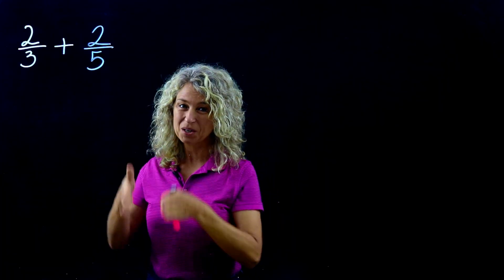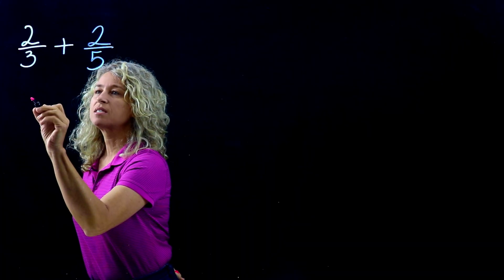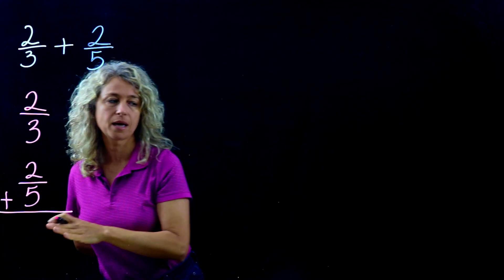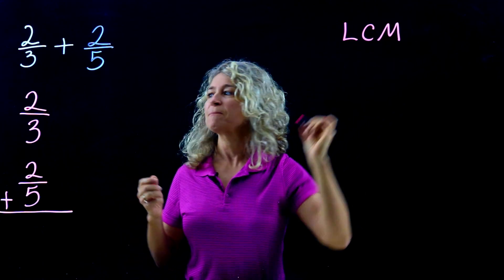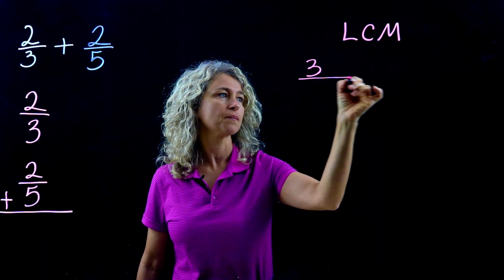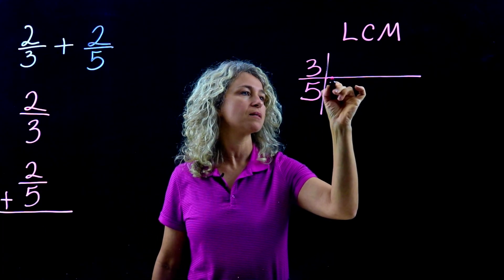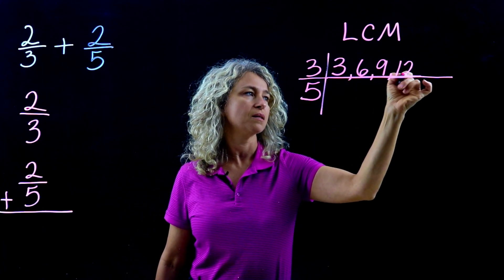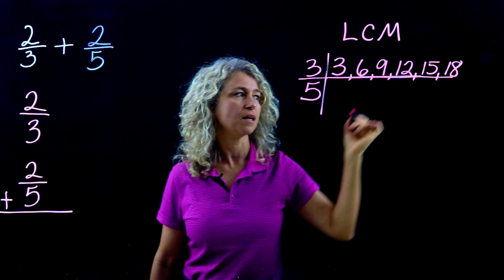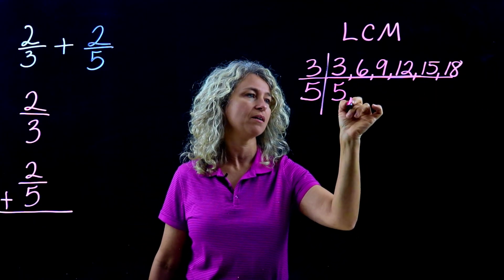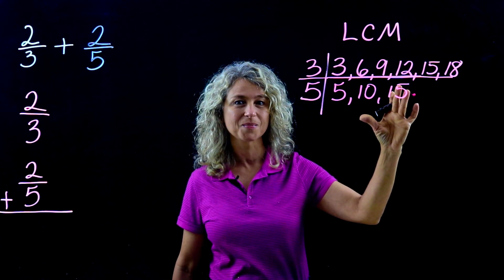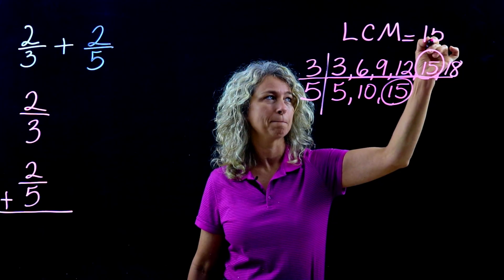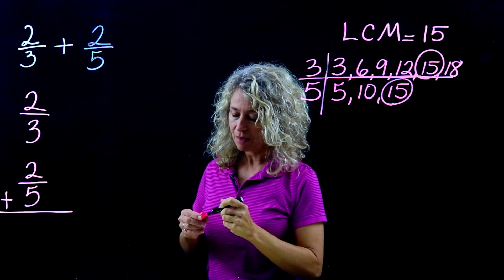Always rewrite the problem vertically — I like it this way, it just seems to flow. So 2/3 plus 2/5, written up and down. We're going to find the LCM with denominators 3 and 5. Listing out multiples: 3, 6, 9, 12, 15, 18... and for 5: 5, 10, 15. I can stop — I see 15 is in common for both, so 15 is my LCM.